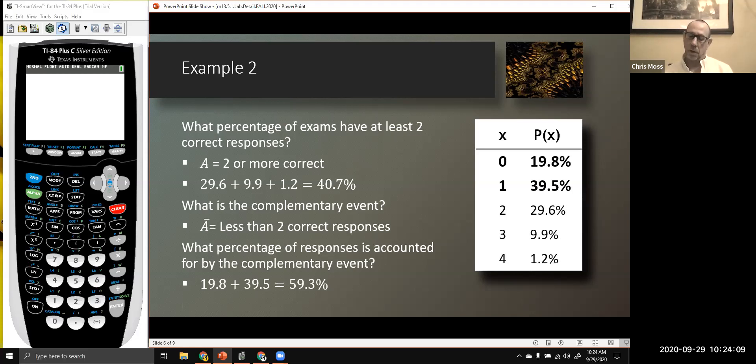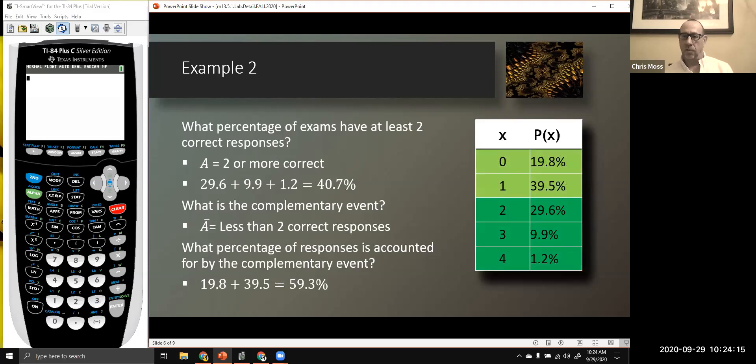You can see the sample space there on the left. And you can see our sets or events on the right. If I sum those percentages, I get 59.3%. Or I could have subtracted 40.7% from the 100%. Either way, we're going to get to the same result. And you'll notice between those two events, it really covers the entire sample space. And that's really the notion of an event and the complementary event. All those simple events are taken up by one or the other of those two events.